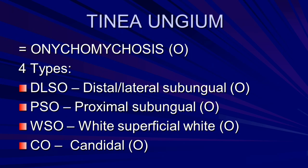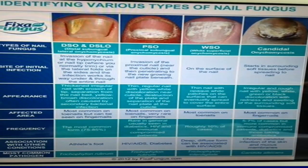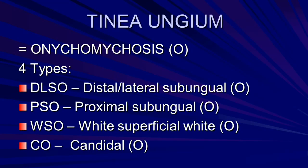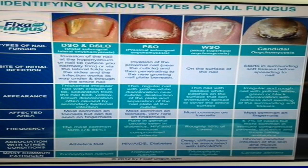Tinea unguium affects the nails with four types: distal lateral subungual, proximal subungual, superficial white, and candidal. Identify all four types.